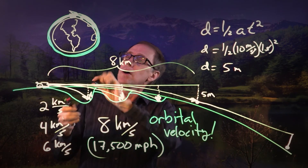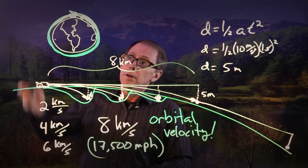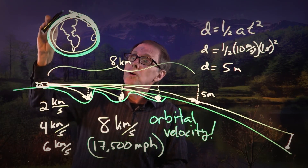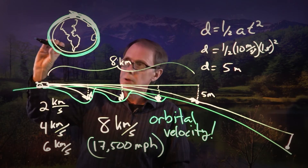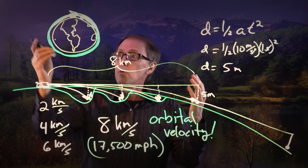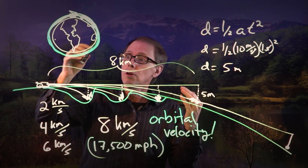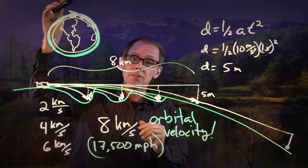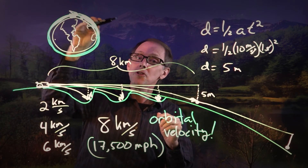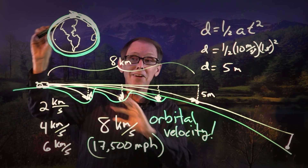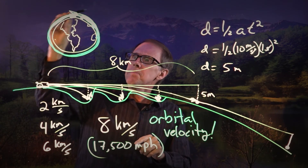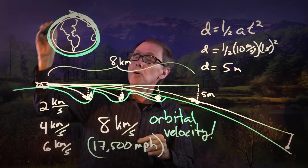What you've got now is your satellite or space station going round and round. It can turn off its engines — why? Because there's no wind resistance to fight against. And Newton's first law: things in motion tend to stay in motion unless there's something to slow it down. If there's nothing to slow it down, it's going to keep going round and round. At eight kilometers per second, it takes about 90 minutes to go around once.